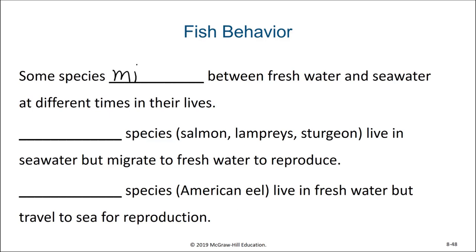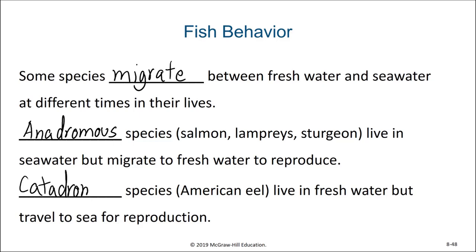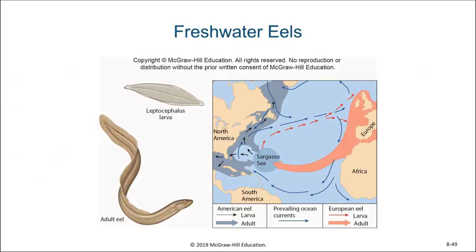Some fish species migrate between freshwater and saltwater at different times in their lives. Anadromous species, such as salmon, lampreys, and sturgeon, live in seawater but migrate to freshwater to reproduce. Whereas catadromous species live in freshwater but travel to sea for reproduction. Here we see the migration pattern of freshwater eels both in Europe and North America. These freshwater eels travel to the Sargasso Sea for reproduction, and the larvae then return home into their appropriate continent and water basins.